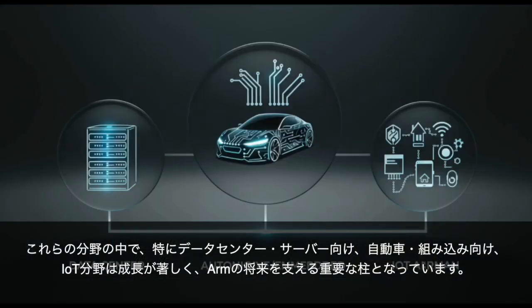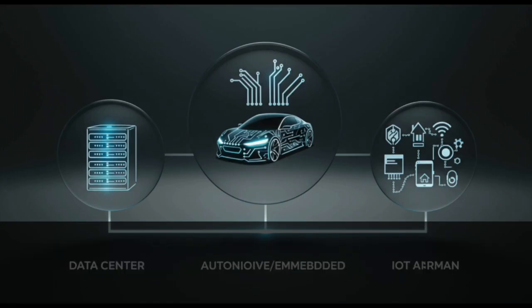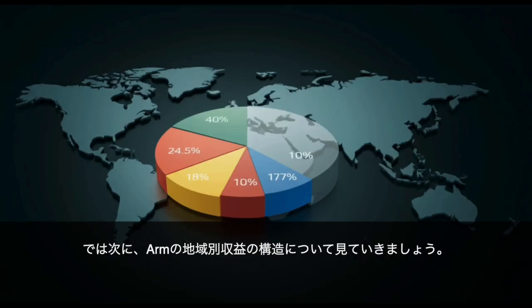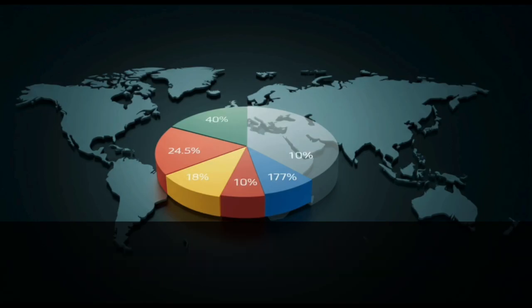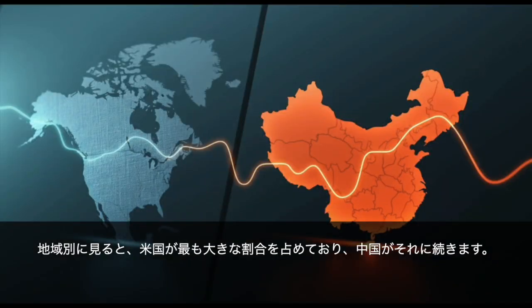Among these sectors, the data center/server, automotive/embedded, and IoT sectors are showing remarkable growth and are becoming important pillars supporting Arm's future. Looking at Arm's full-year revenue for 2024 by region, China accounts for about 24.5%, the United States for over 40%, Taiwan for about 10%, South Korea for about 8%, and other regions for about 17%. The United States accounts for the largest share, followed by China.